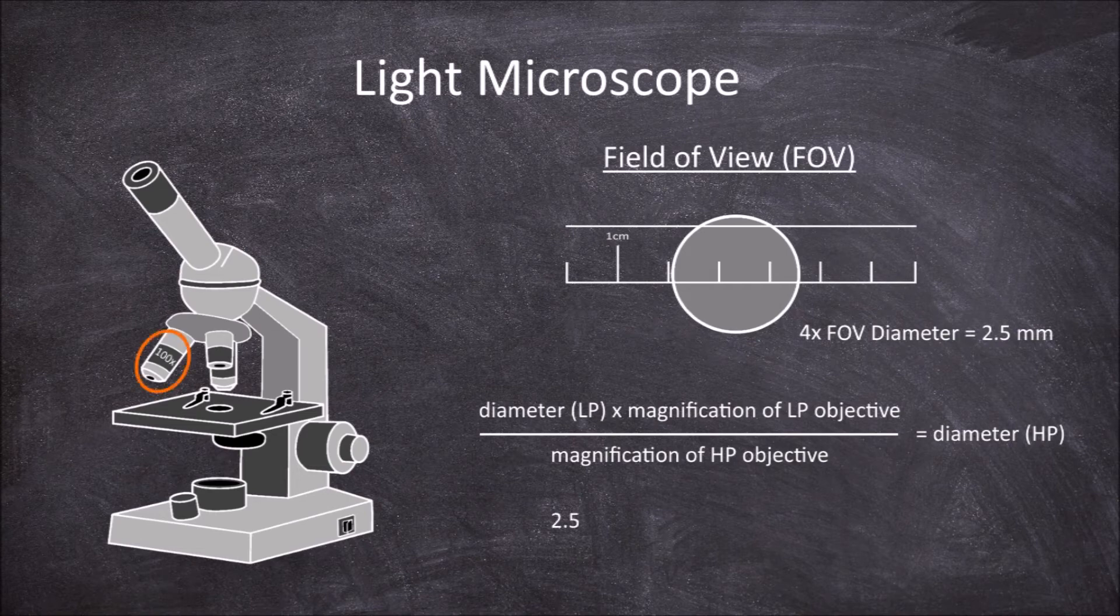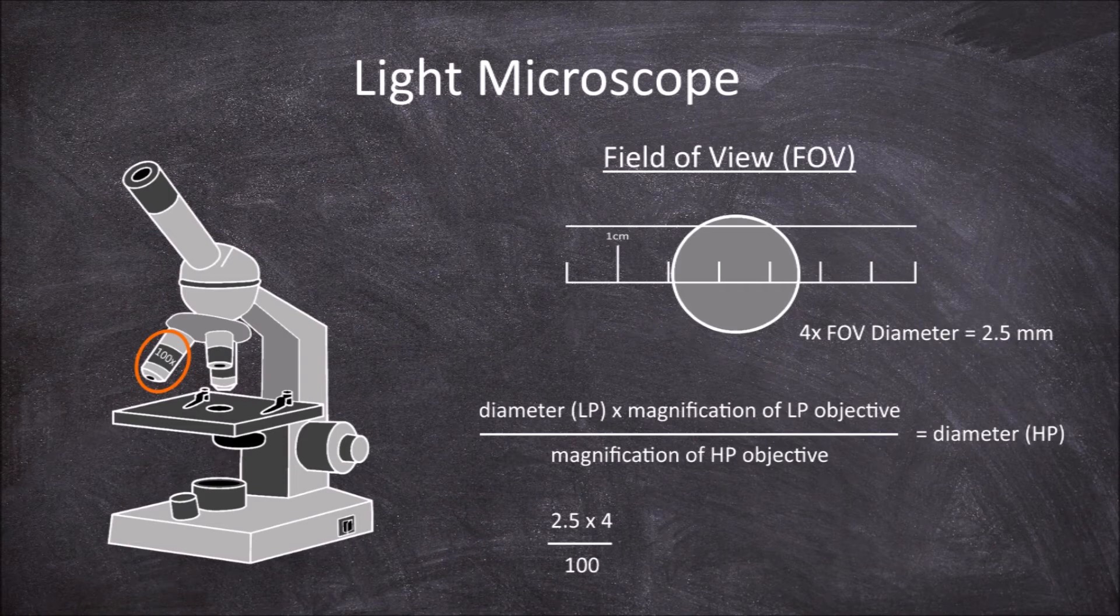So if our measurement was 2.5 millimeters for the low power objective lens 4 times, and we were trying to work out the field of view diameter with the objective lens for 100 times, we would times 2.5 by 4, then divide by 100, which gives a field of view of 0.1 millimeter, which we can convert to a more useful measurement of 100 micrometers.